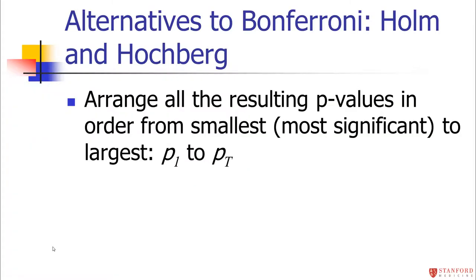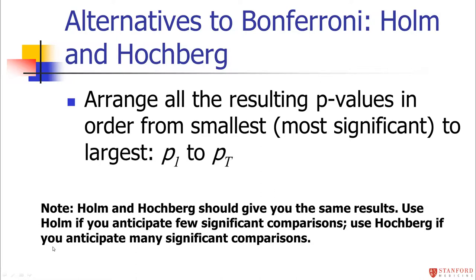Some alternatives to Bonferroni that are a little less conservative but still easy to apply are the Holm and Hochberg procedures. You take all p-values from all your tests, arrange them from smallest (most significant) to largest. Holm and Hochberg give identical results — the difference is just which direction you apply them. If you have very few significant comparisons, Holm is faster to apply; if you have many significant comparisons, Hochberg is faster.